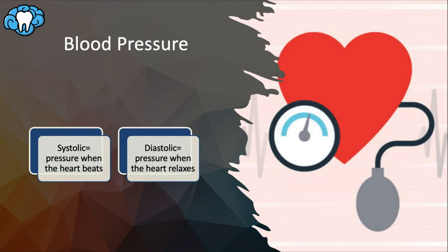Blood pressure is the force of blood pushing against the walls of blood vessels, represented as two numbers measured in millimeters of mercury. The upper number, or systolic blood pressure, measures the pressure of blood when the heart beats after the ventricles contract. The bottom number, or diastolic blood pressure, is when the heart rests between beats, so you'd expect this number to be lower because that's when the heart is relaxing.